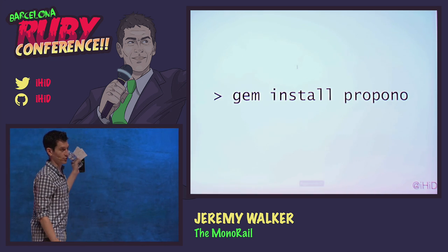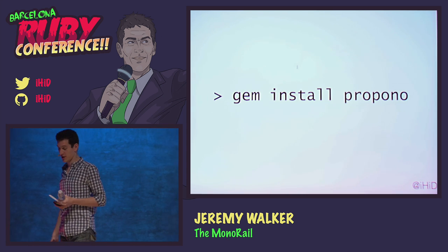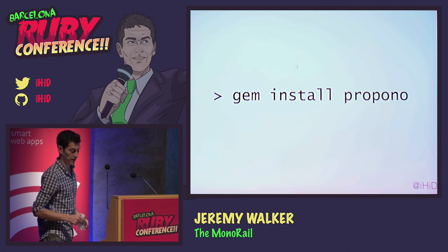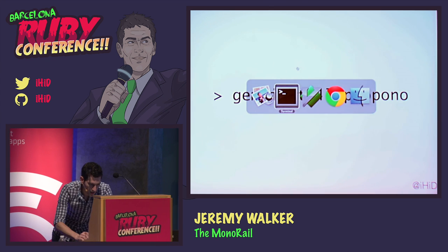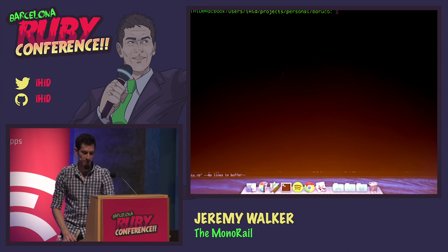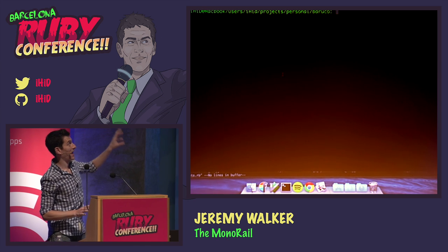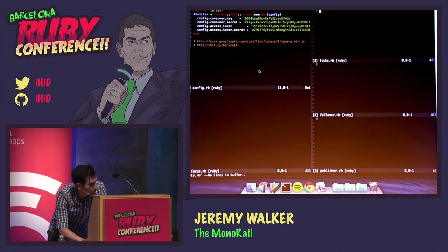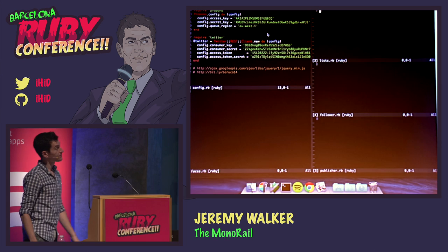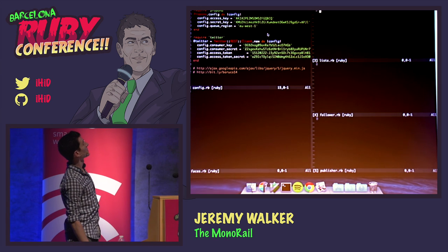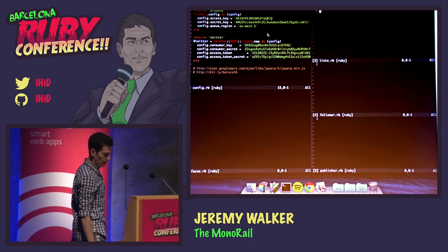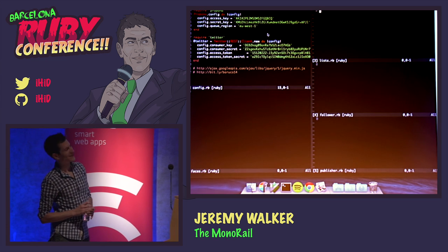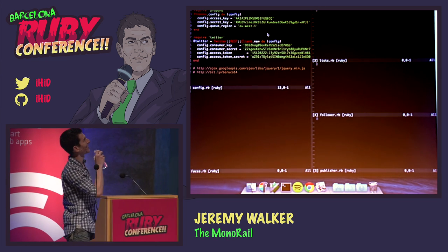In case you missed it, gem install propono is what you want to type. I'm going to try and build an example which can only go badly at 9 o'clock in the morning. So this is Vim — can you all see that? This is a config file. You can see some secret keys there which I ask you not to abuse. I will be cancelling all of these quickly after the talk.